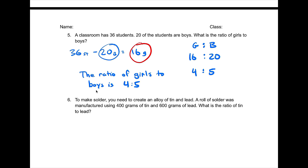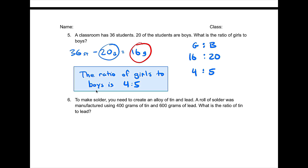If you just put 4 to 5, I need to know what the 4 represents and what the 5 represents. So I need to actually state in the answer that the ratio of girls to boys is 4 to 5.